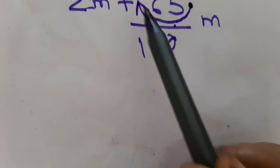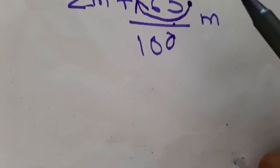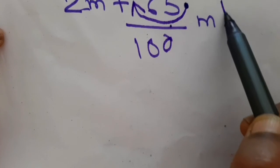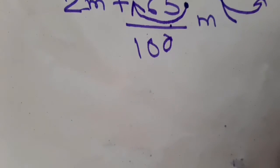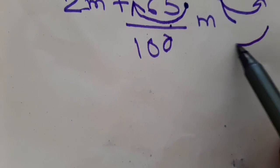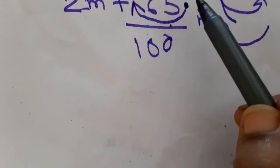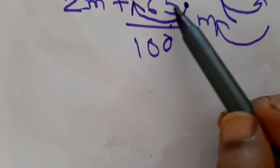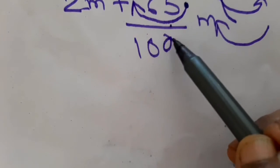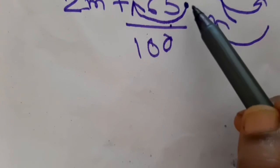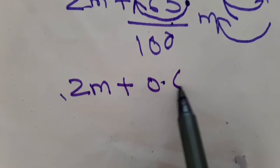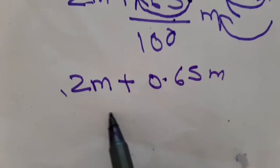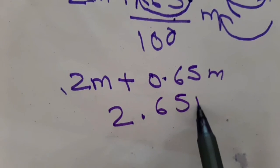To multiply, the decimal shifts from left to right; to divide, the decimal shifts in the opposite direction — from right to left. So you leave 2 digits: 5 and 6, and the decimal comes before them, giving 0.65 meters. Therefore, 2 meters plus 0.65 meters equals 2.65 meters. The length of cloth for the shirt is 2.65 meters.